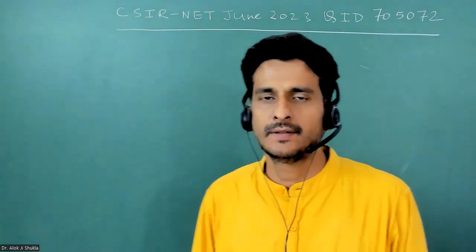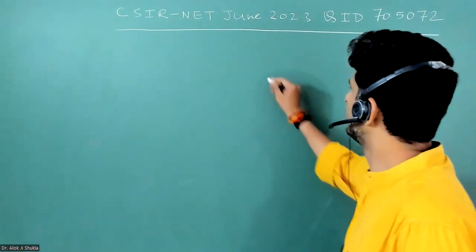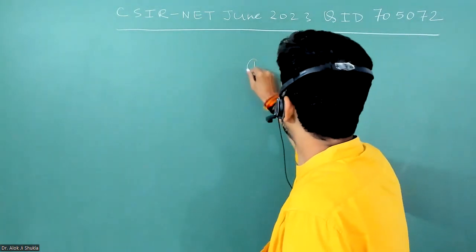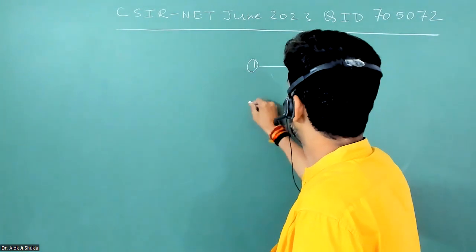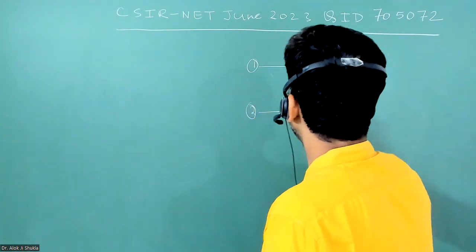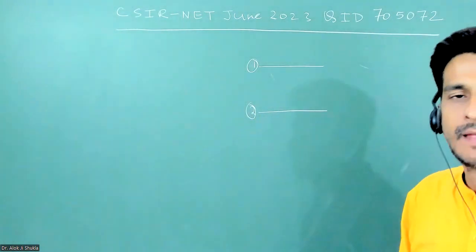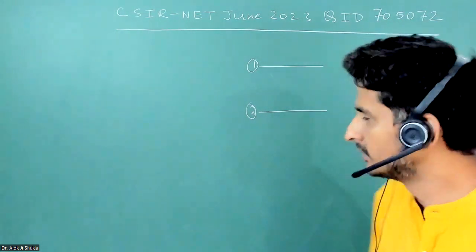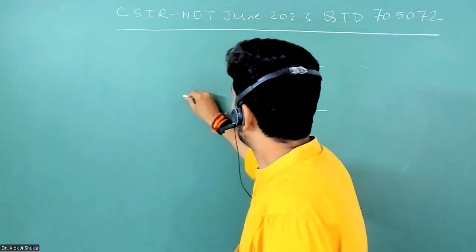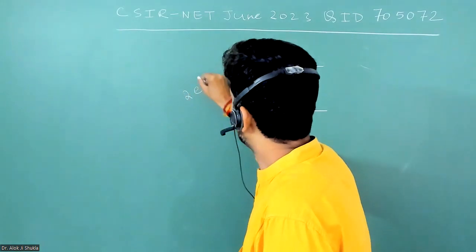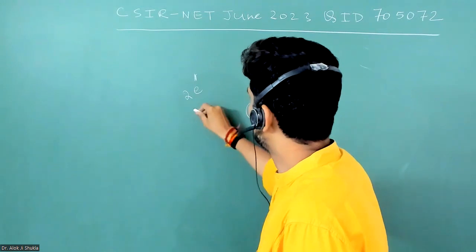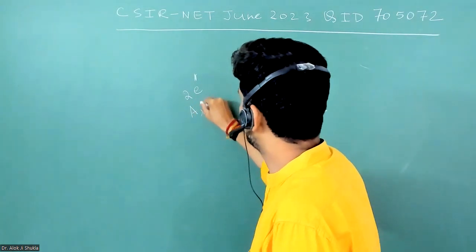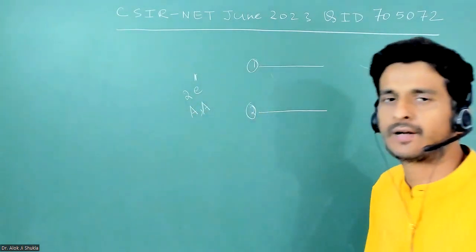In this question, two sites are given actually. So suppose this is site number one, and this is site number two. Two sites are given, and you have two electrons. Two electrons are given. We can take them as electrons.